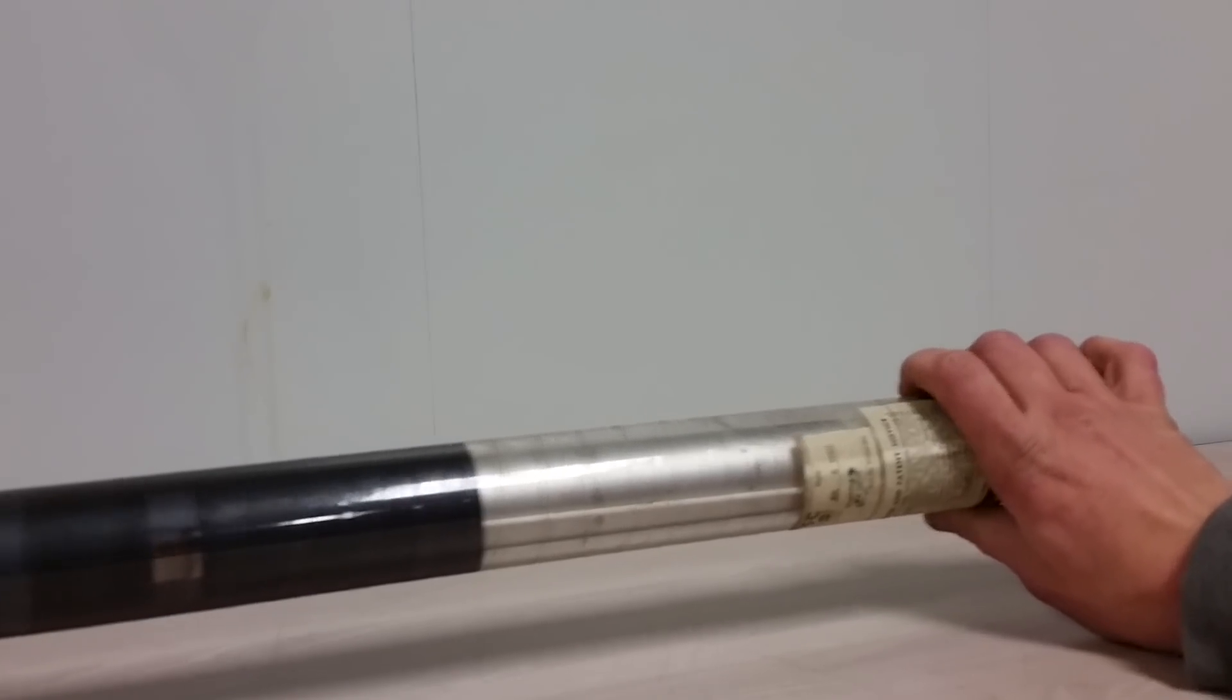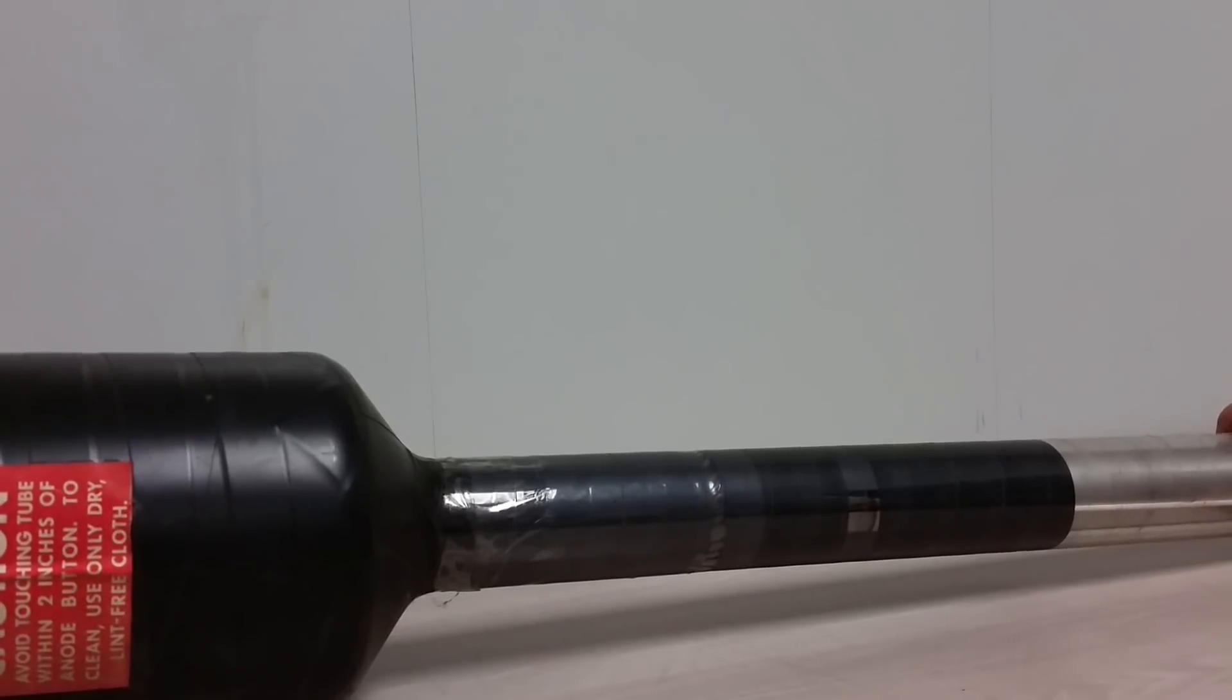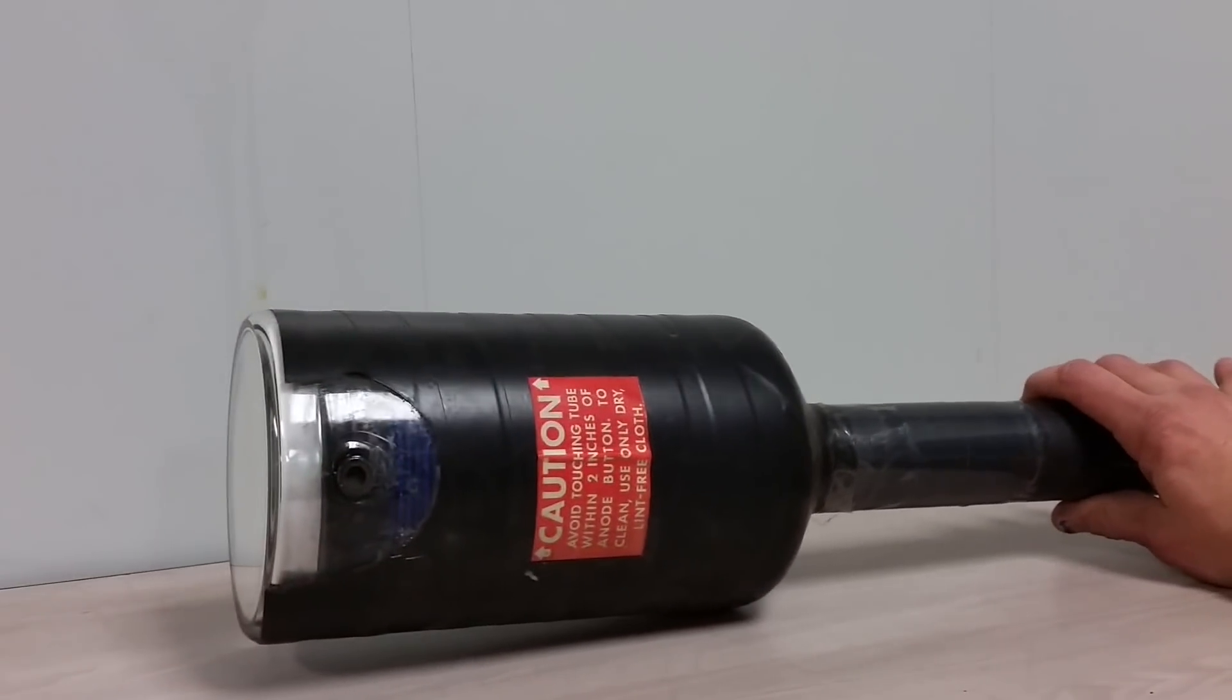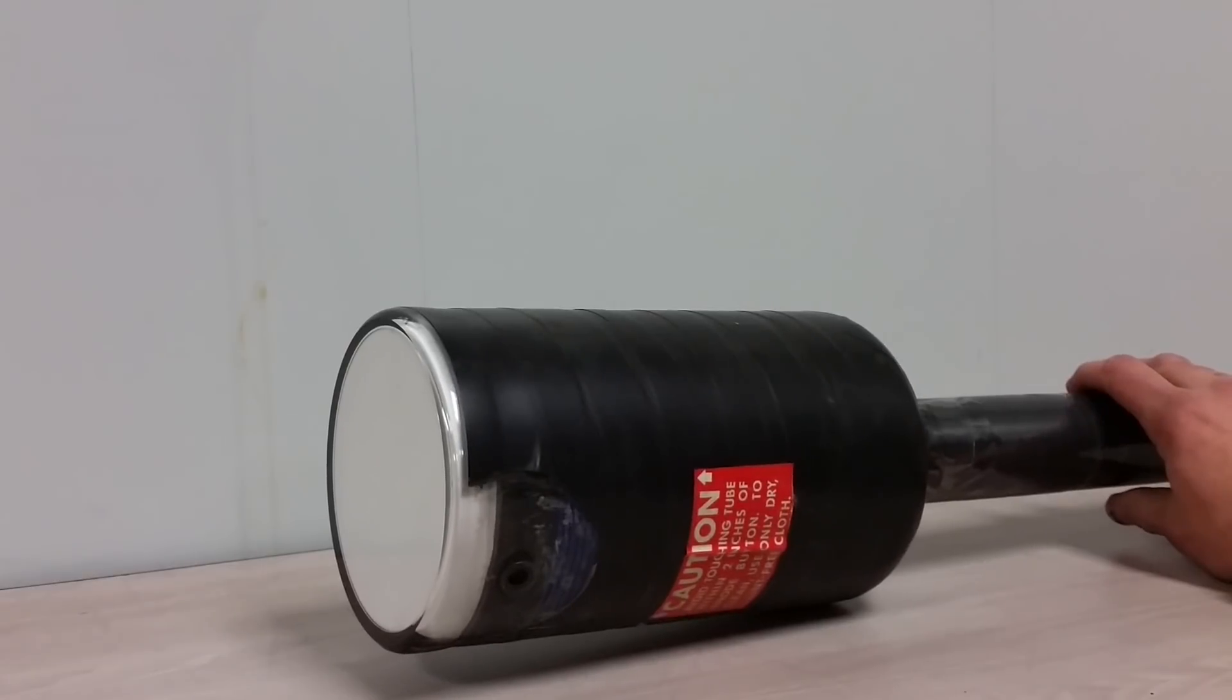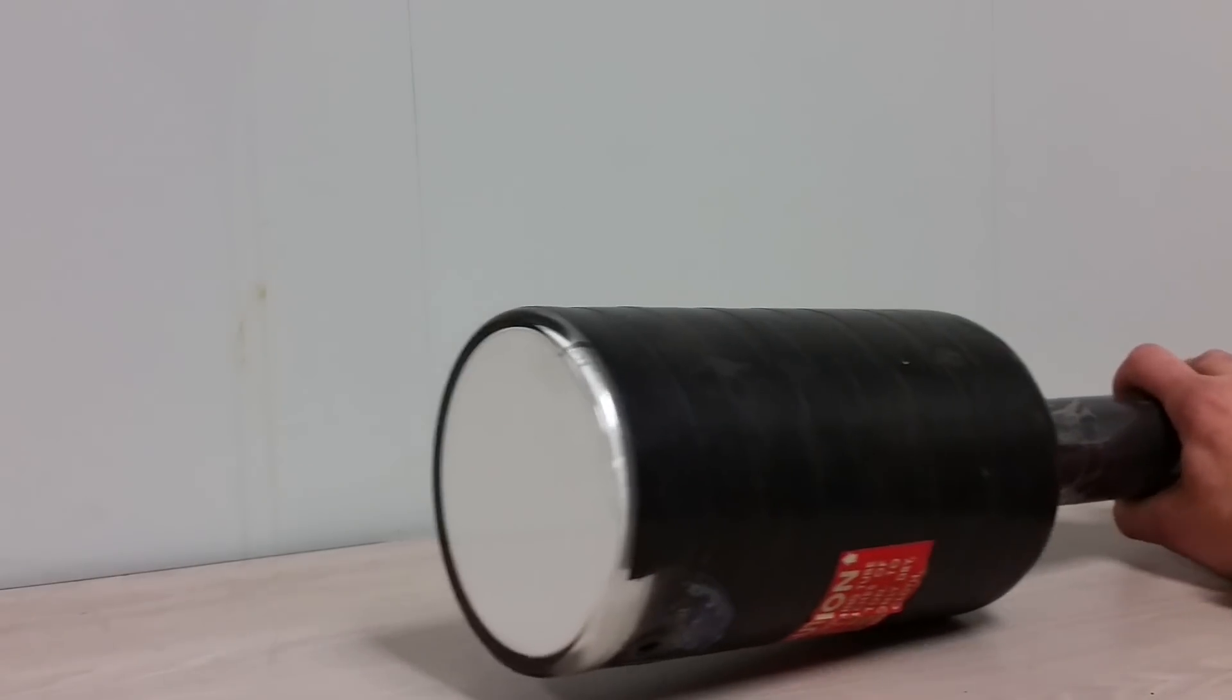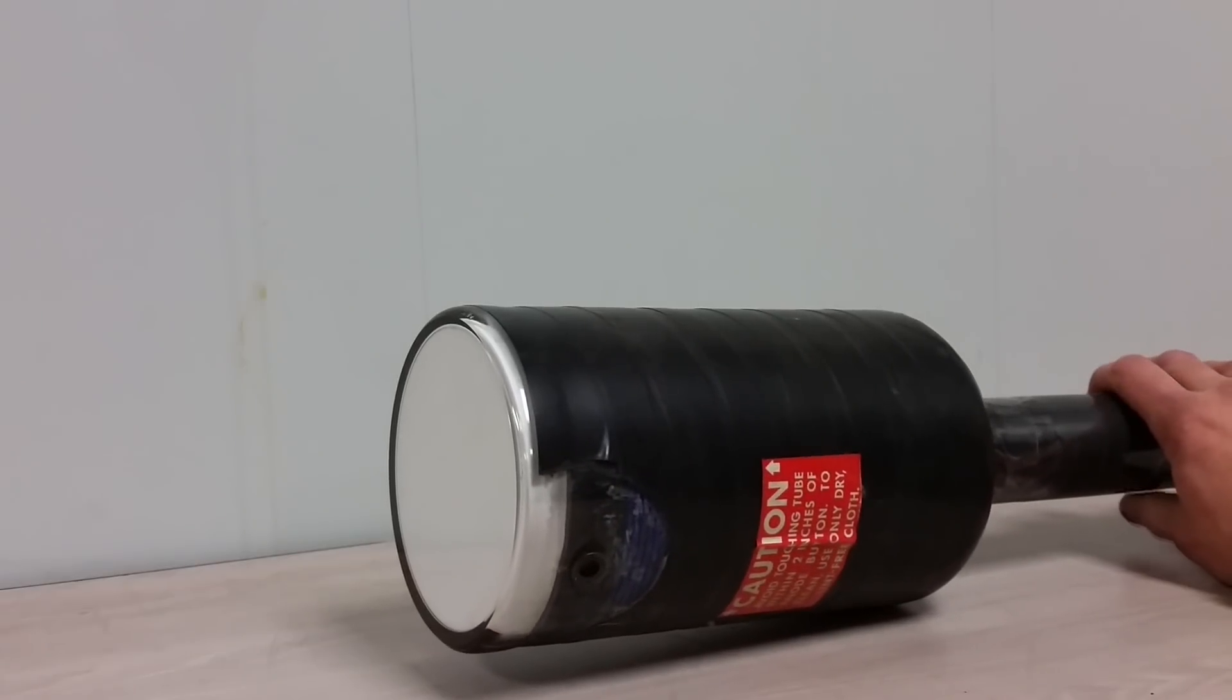There was also the Typotron, which is perhaps a little more famous because they were used in the SAGE terminals. They were huge Hughes tubes and they were extremely similar, except they were storage. So basically, you could throw a character or whatever up on the phosphor and it'd stick there. And I actually do have one of those tubes. I think it's a 6577 maybe? I don't recall the number offhand.